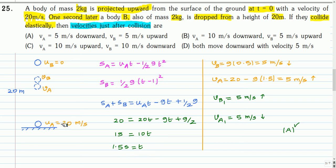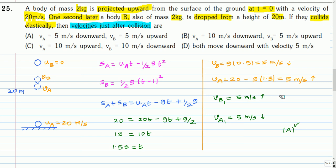At t = 1.5 s, the velocity of body B is 0 + g·(1.5 − 1) = g·0.5 = 5 m/s downward. The velocity of body A just before collision is 20 − g·1.5 = 5 m/s upward. So both are moving at 5 m/s in opposite directions. Using the standard result for two equal masses colliding elastically with equal and opposite velocities, they interchange velocities: body B moves at 5 m/s upward, body A moves at 5 m/s downward. The correct option is option A.